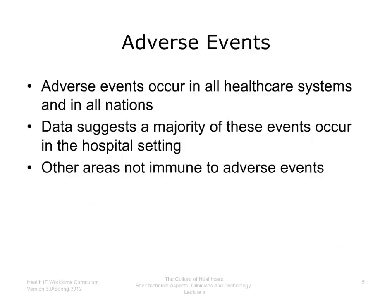It is reasonable to assume that adverse events occur in all healthcare systems and in all nations. The data suggests that most of these events occur in the hospital or inpatient setting, although researchers are not sure about the incidence of errors in the ambulatory setting because the data for outpatient events is fragmented and incomplete. Adverse events can also occur in other settings, including nursing homes, long-term care facilities, emergency rooms, pharmacies, and even the patient's own home.